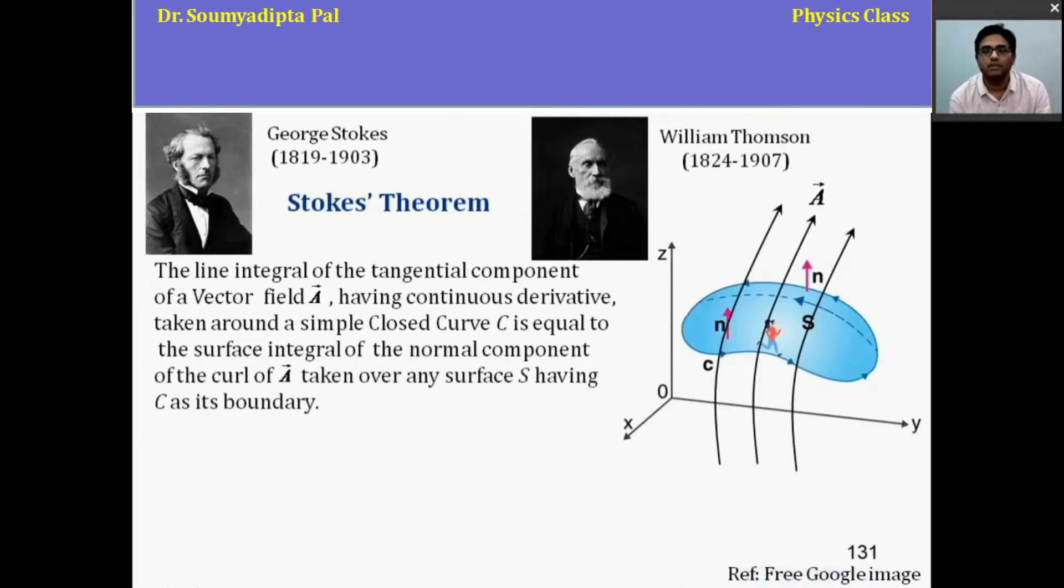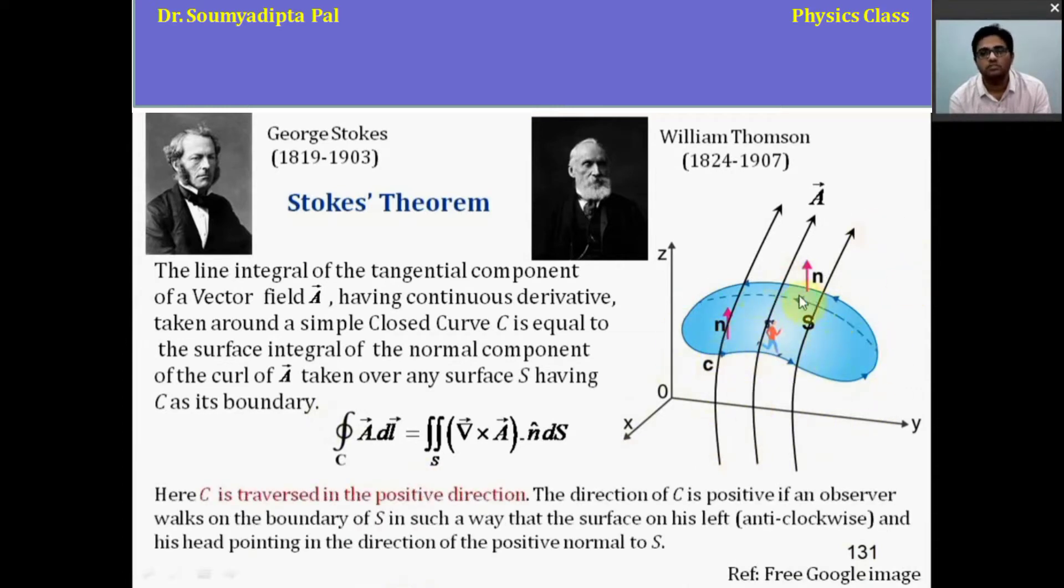It tells that the line integral of the tangential component of continuous vector field A taken over a simple closed curve C is equal to the surface integral of the normal component of the curl of the vector field. The direction of the line integral along the curve is considered as positive direction. It means if an observer walks on the boundary of the surface in such a way that the surface on his left and his head pointing in the direction of positive normal to the surface.